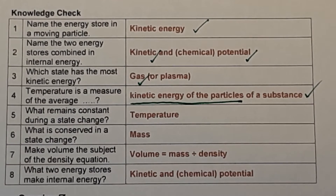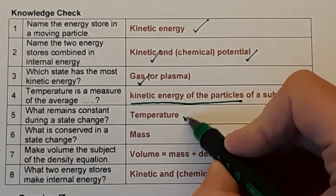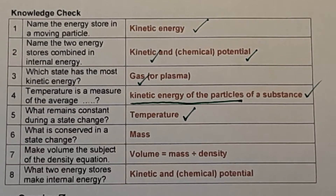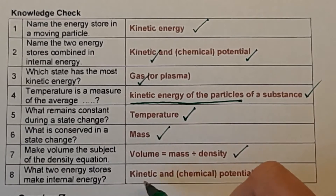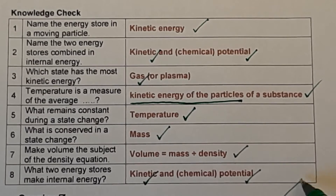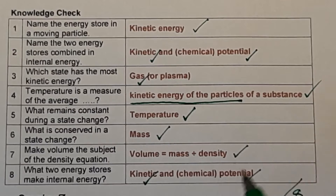Question five: what remains constant during a state change? Temperature remains constant. Question six: what is conserved in a state change? That would be mass. Question seven: make volume the subject of the density equation — volume equals mass divided by density. Question eight: what two energy stores make internal energy? That's kinetic and chemical potential, very similar to question two. Give yourself a mark out of eight. Questions two and eight have two answers but only one mark each.